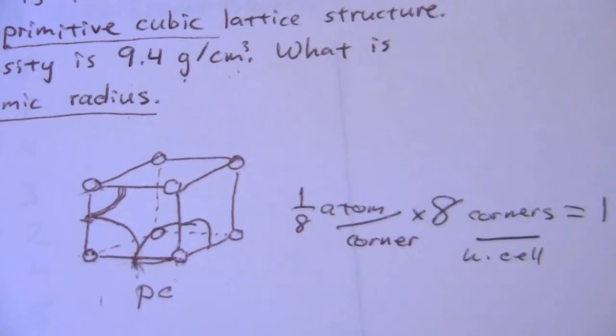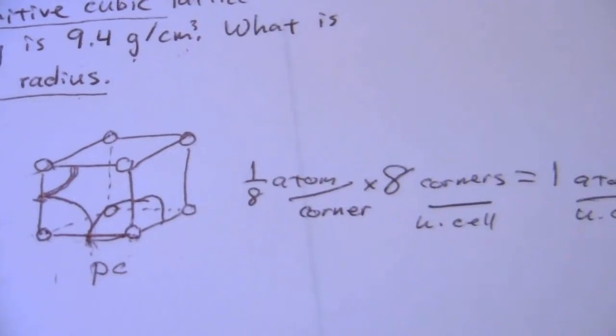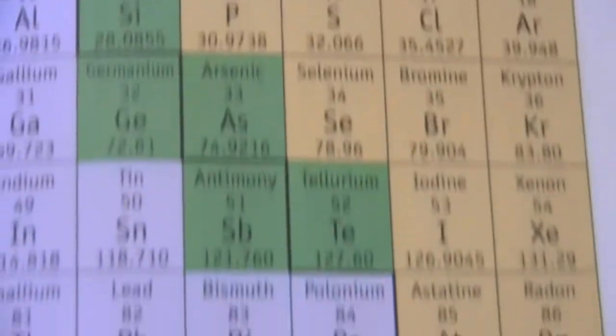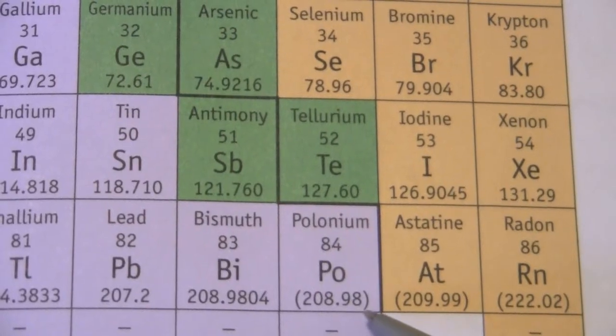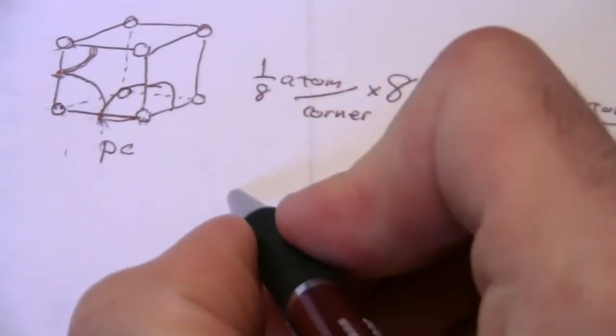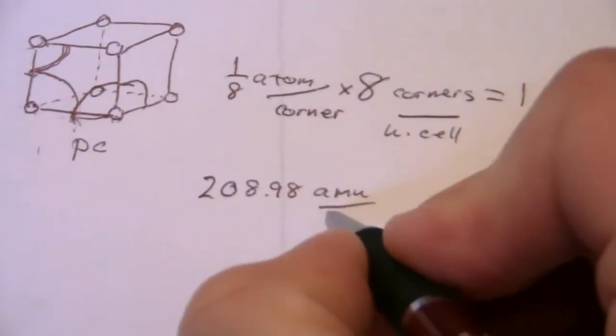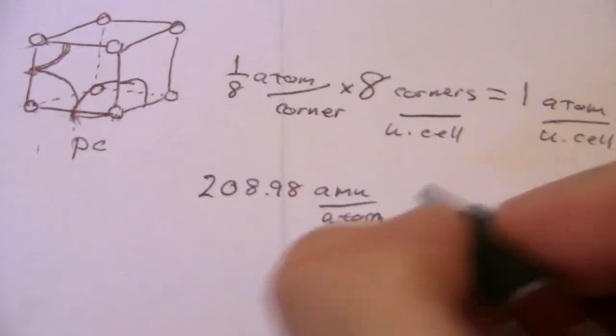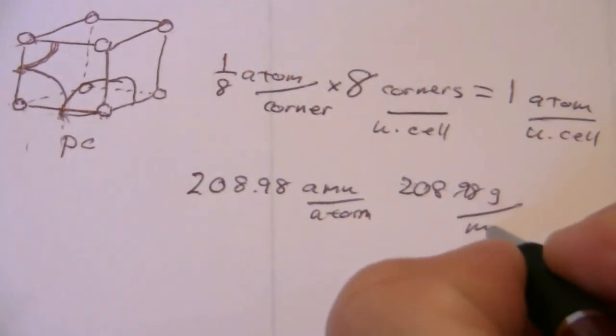How much does one atom of polonium weigh? To answer that, of course, we can go to the periodic table. And if you look here, here is polonium, element number 84, 208.98. The units of this number are an AMU per atom. Or, we could say that's AMU per atom, or 208.98 grams per mole.